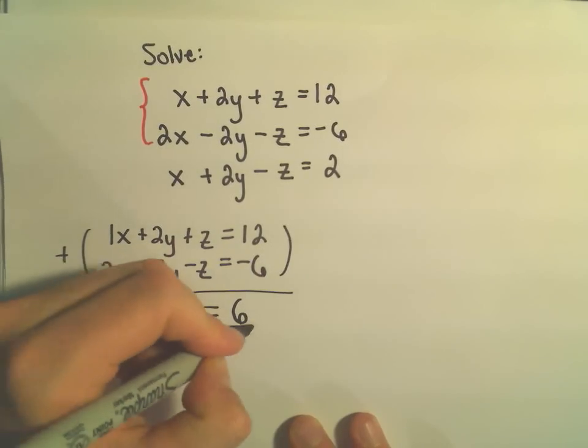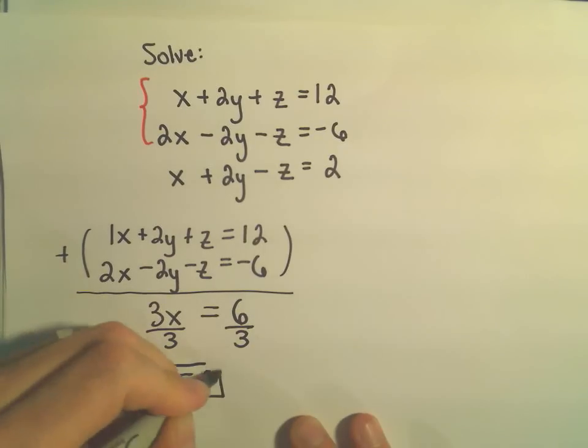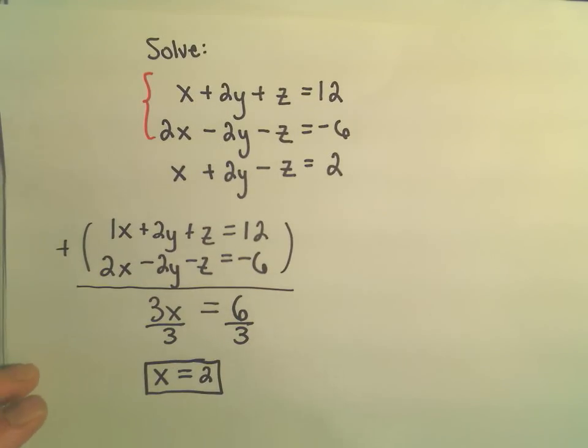Then if we divide both sides by 3, we simply get our value of x equals 2. So, that to me seems like a good thing.